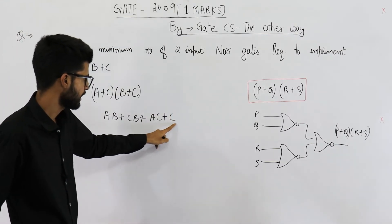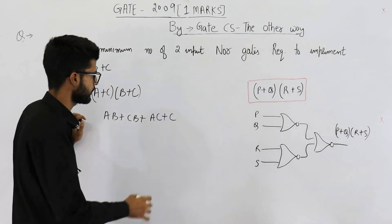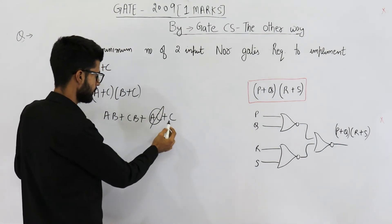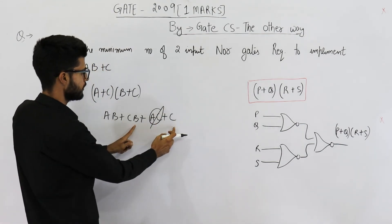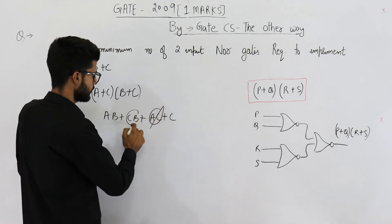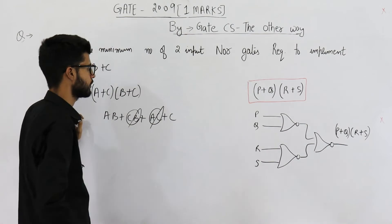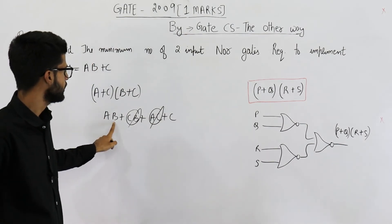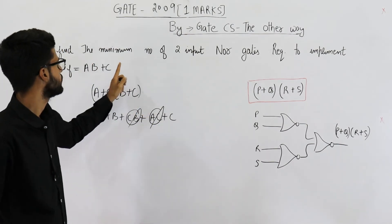Apply the absorption law here — this one is redundant. Apply absorption law in these two — this one is also redundant. And you get AB plus C back.